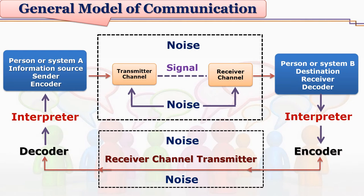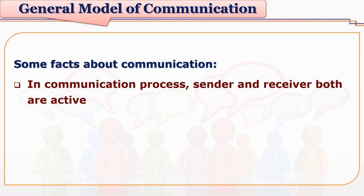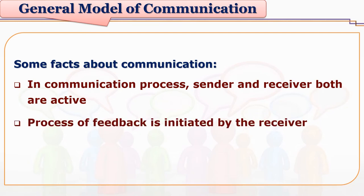Because of this, a general model of communication needs to be designed. This general model of communication is given by Dr. S.S. Kulkarni in his book. This model reveals some important facts about communication. In the communication process, both sender and receiver are active — it is no longer a one-way process. The process of feedback is always initiated by the receiver in this model.